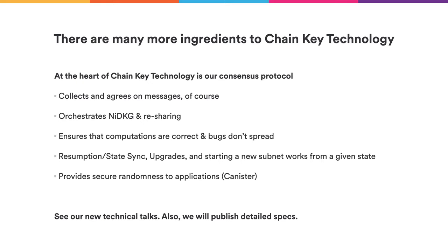Non-interactive DKG and key resharing are just two ingredients of chain key technology — there is much more. At the heart of chain key technology is the consensus protocol, which orchestrates all the different sub-protocols. The consensus protocol collects and agrees on messages from users and gets them executed, orchestrates non-interactive DKG and resharing between nodes, ensures computations are correct, and ensures that even if bugs happen due to hard disk failures or cosmic glitches that flip bits, those bugs don't spread to other subnets. It also orchestrates state resumption, synchronization, upgrades, and starting a new subnet from a given state.